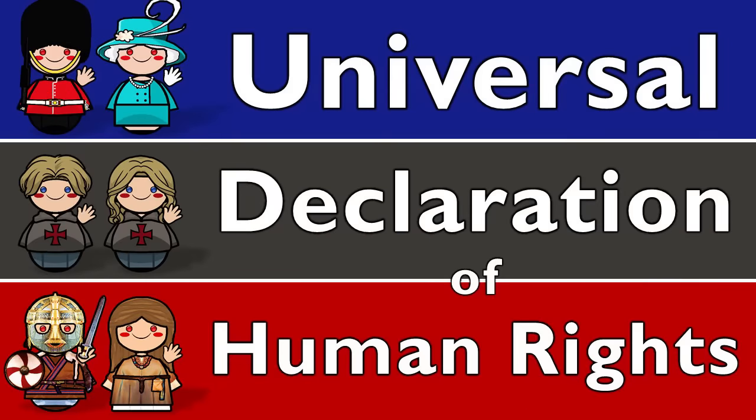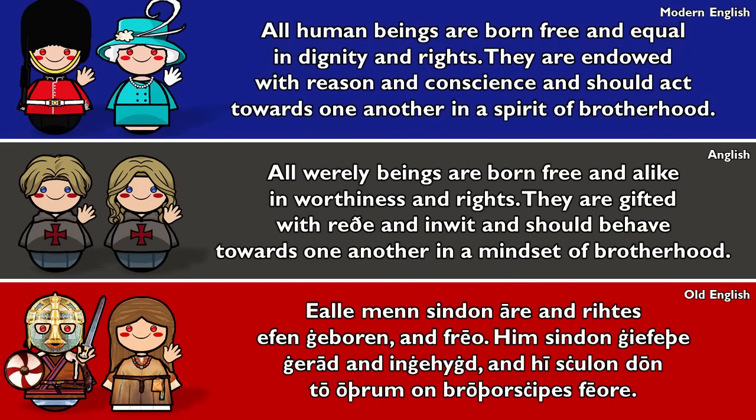The Universal Declaration of Human Rights: 'All human beings are born free and equal in dignity and rights. They are endowed with reason and conscience and should act towards one another in a spirit of brotherhood.' In Anglish: 'All worldly beings are born free and alike in worthiness and rights. They are gifted with wreath and inwit, and should behave towards one another in a mindset of brotherhood.'